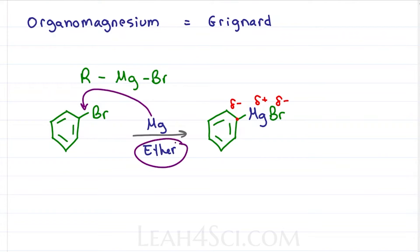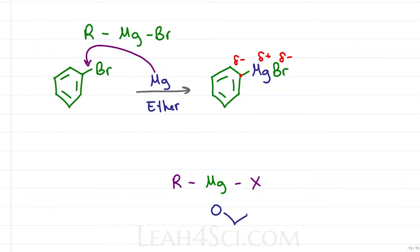A solvent like ether is very important, because the negative oxygens will donate their electronegativity and complex with the magnesium metal as follows.